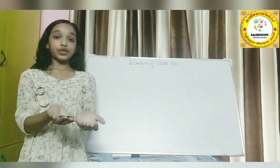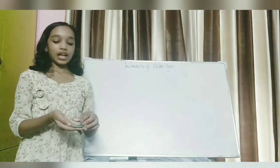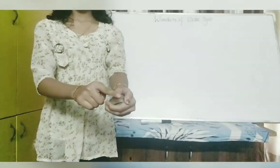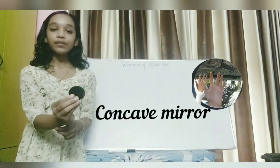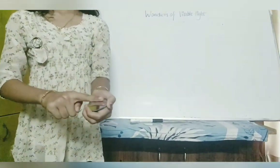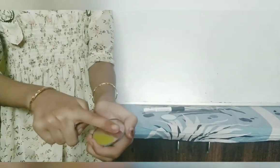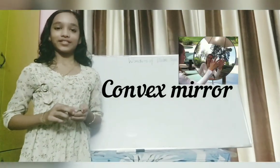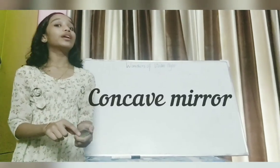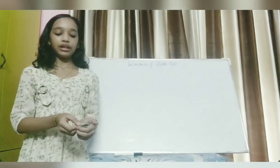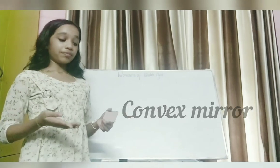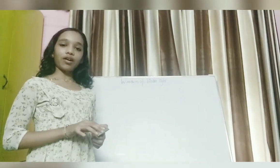These are the other two mirrors. This mirror's surface is curved inwards, like an open cave — it is called a concave mirror. And this mirror's surface is curved outwards — it is called a convex mirror. So: a mirror with a plain surface is a plain mirror, a mirror with a surface curved inwards is a concave mirror, and a mirror with a surface curved outwards is a convex mirror.